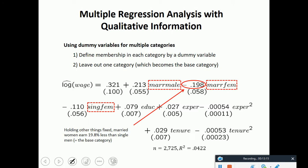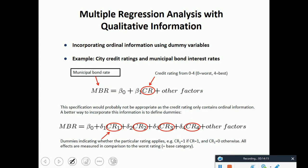We can use dummy variables for multiple categories. Define membership in each category by dummy variable. Holding other things fixed, married women earn 19.8% less than single men. That is maybe because married women have to take care of their children, they have to do childbearing and things like that. Maybe that's the reason, and that's why they get lower work experience and earn a lower wage.